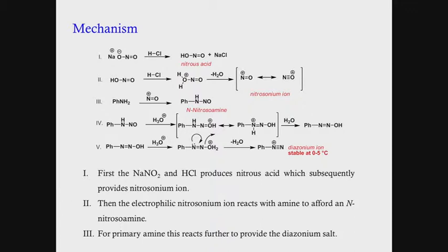An important point is that if we take an alkyl amine, the diazonium ion with an alkyl group is not stable enough and will decompose very fast. In contrast, the diazonium ion with an aryl group is stable enough for further reactions. Additionally, the diazonium ion can be used as an electrophile in several different kinds of reactions.